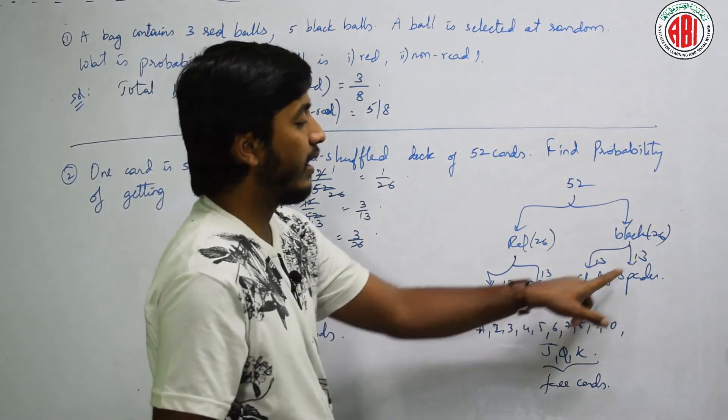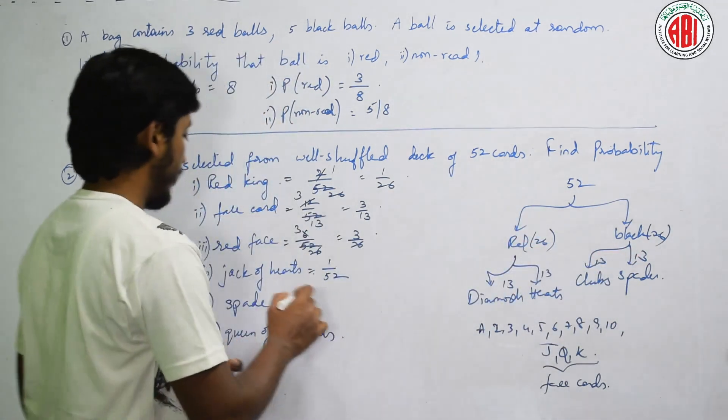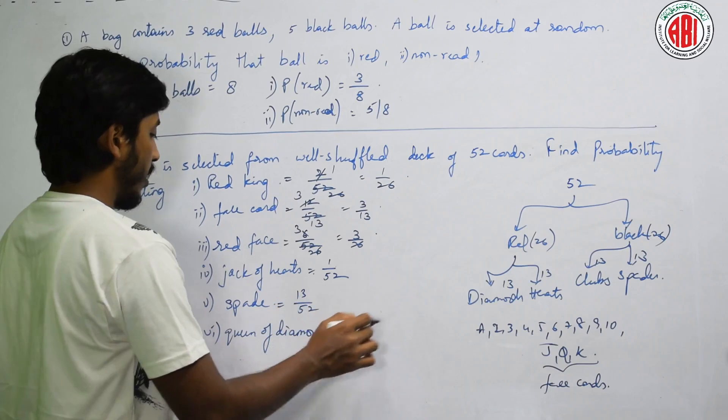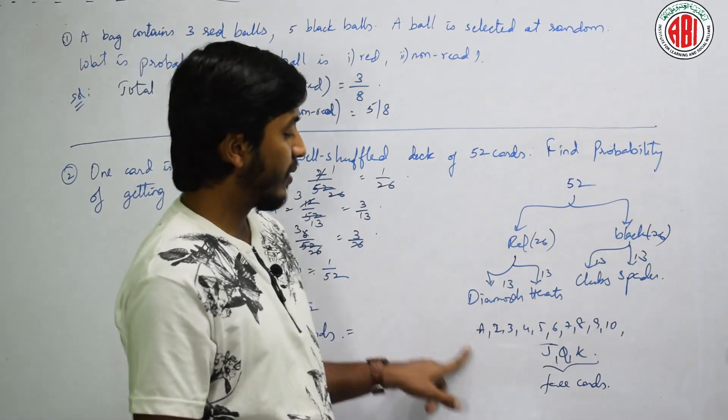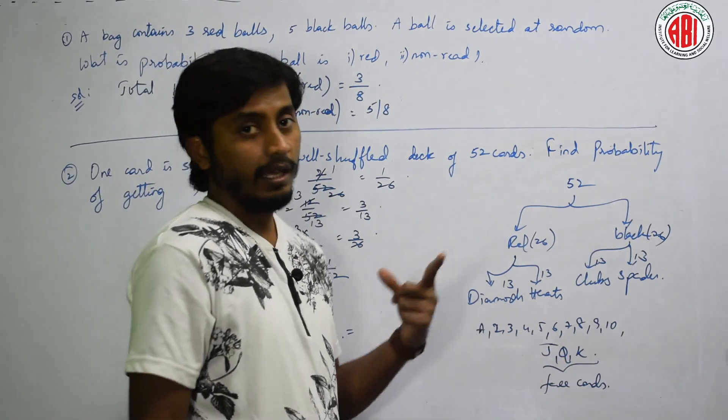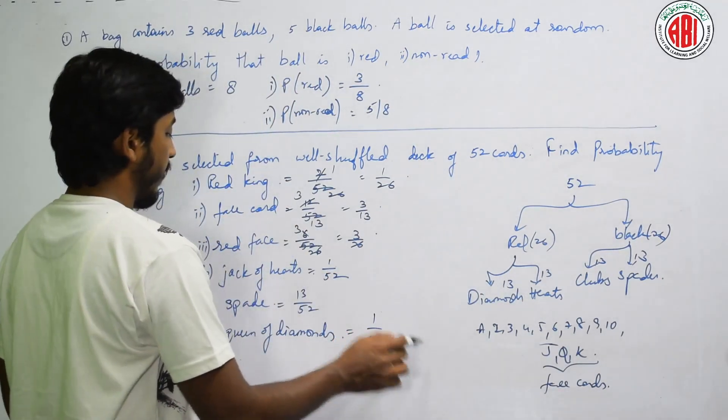Spade. Kitne spade se hai? 13. 13 by 52. Queen of diamonds. Diamond me kitne queen rahe? Ek, right? Fine. 1 by 52.